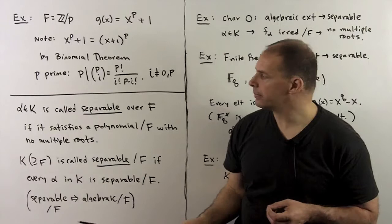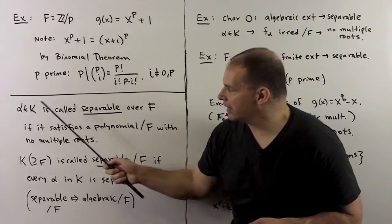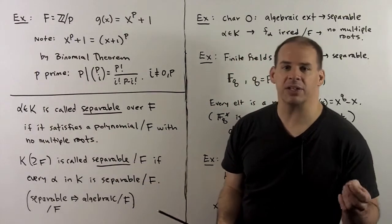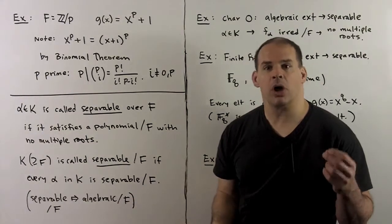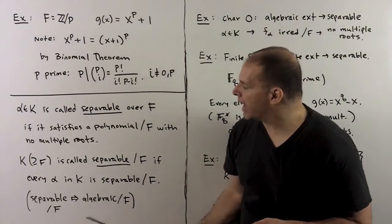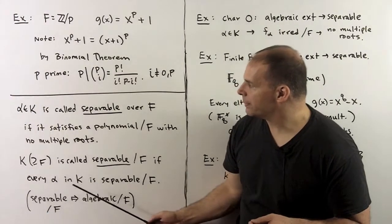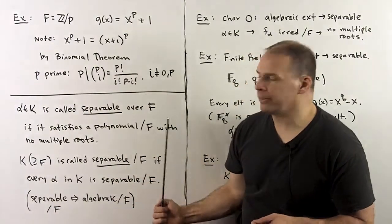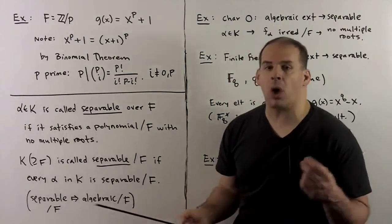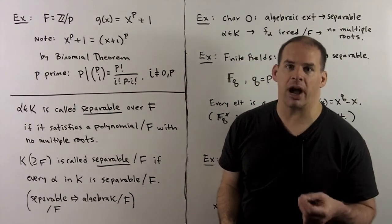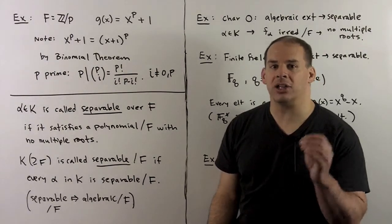We finish with definitions. We have k an extension of f. We call alpha in k separable over f if it satisfies a polynomial over f with no multiple roots. Then we call k a separable extension of f if every alpha in k is separable over f. A separable extension over f is always an algebraic extension over f. If we want to construct separable extensions, we don't want to adjoin any transcendentals.